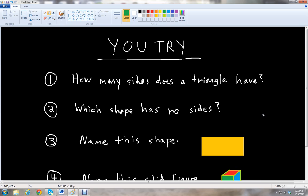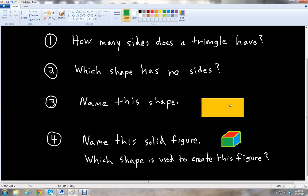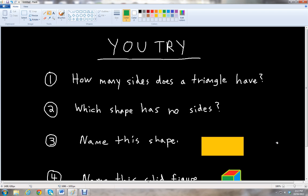Okay, so I have some problems for you to try on your own. I actually have four problems. The first problem asks, how many sides does a triangle have? And the second problem asks, which shape has no sides? The third question is, name this shape, which is right here. And then, fourth question is, name this solid figure. And then, which shape is used to create this figure? So I'll give you time to think about those and answer them.